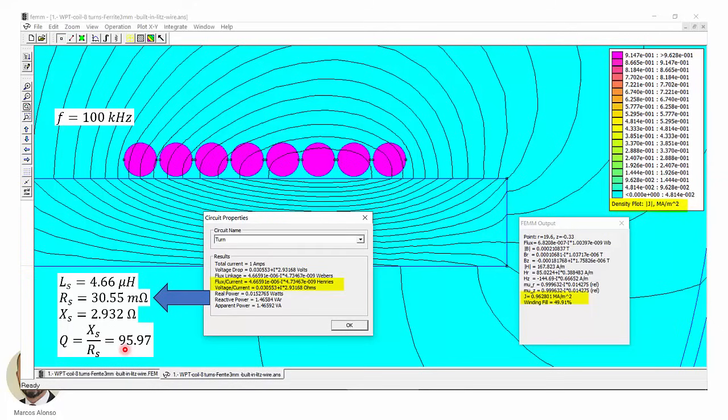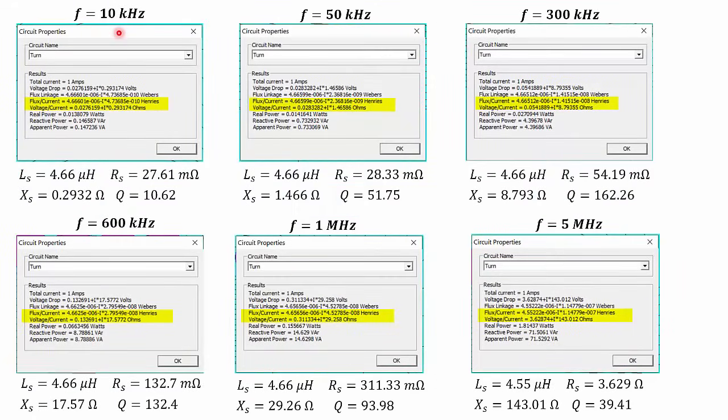And here on the FEMM output window, we can see the current density, which is approximately 1 ampere per square millimeter. So FEMM is considering that we have all the turns filled with wire, but then we have a winding fill of around 50%, which is what we have selected. We selected a fill factor of 0.5.